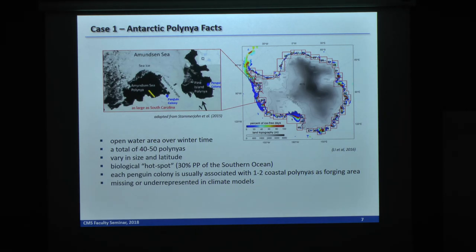This polynya is what I think Amelia talked about a moment ago. It's in the Maud Sea. This polynya is as big as the area of South Carolina. So they're not trivial, they're large areas of open water. And we have about 40 to 50 polynyas around the Antarctic coast, around the coastal lines. They vary in size and latitude.